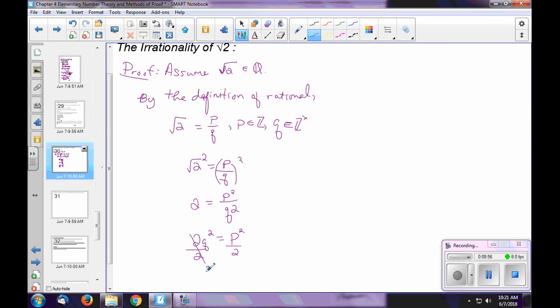Q squared is equal to P squared over 2. And this is where things should start to get uncomfortable.